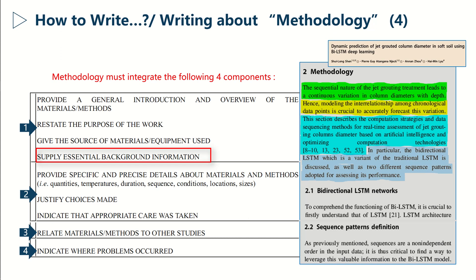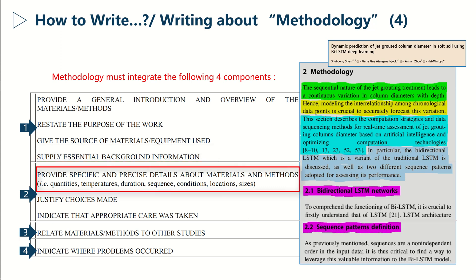The second component includes providing specific and precise details about materials and methods, justifying the choices made, as well as indicating that appropriate care was taken. The third component is about relating materials and methods to other studies. Ultimately you should indicate where problems occurred during the experiment.